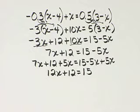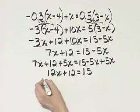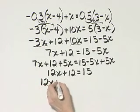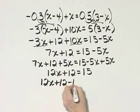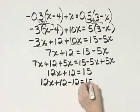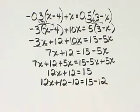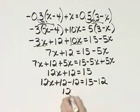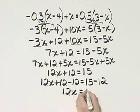And now let me subtract 12 from both sides. So the left side, 12x plus 12 minus 12 is equal to 15 minus 12. The left side is 12x, the right side is 3.